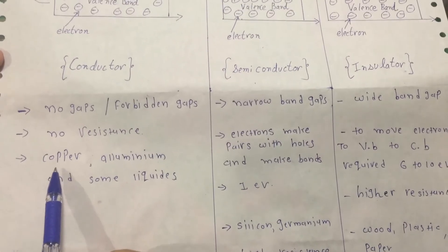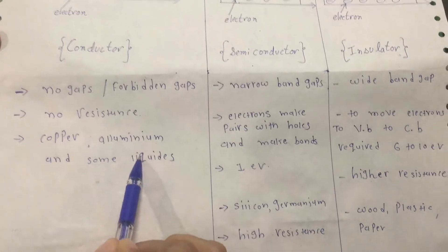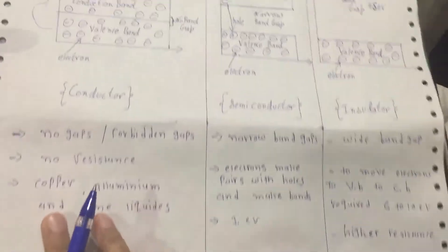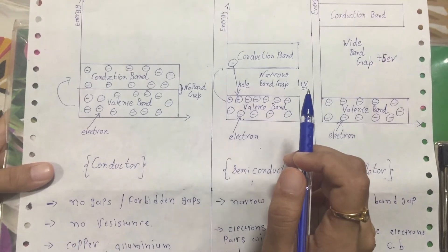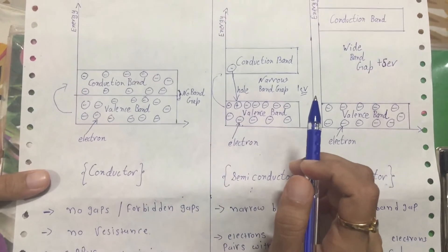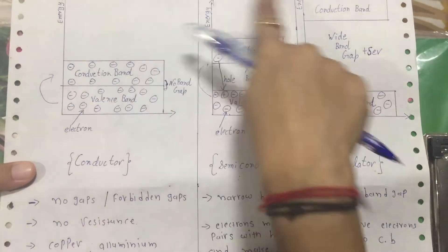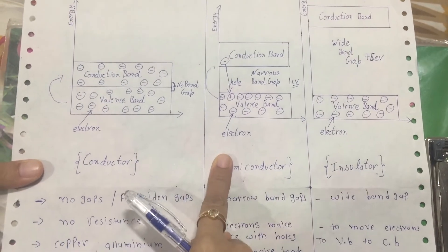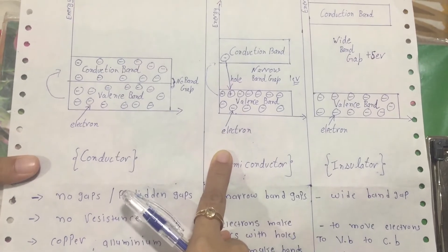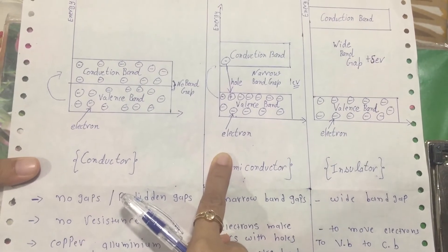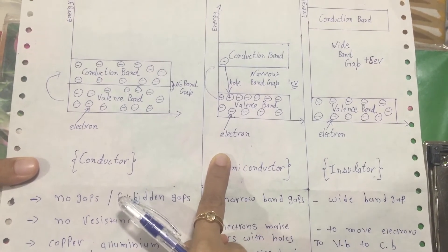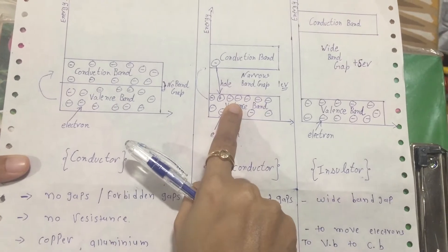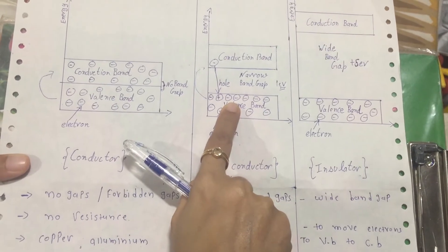Examples of conductors are copper, aluminum, and some kinds of liquids. Now we are going to understand about semiconductors. This is the energy level diagram of a semiconductor. It has less conduction than a conductor and more resistance than a conductor — that's why it is called a semiconductor.